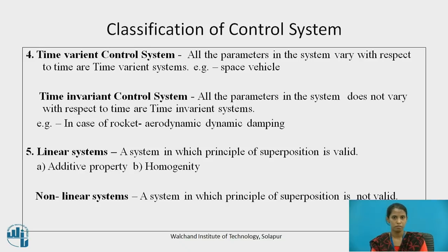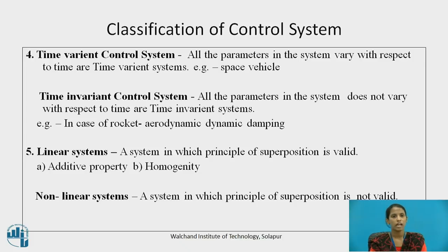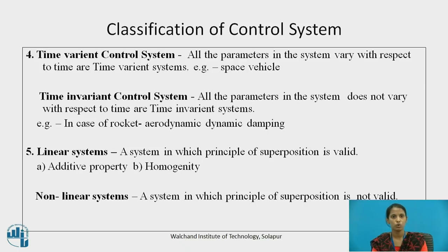Time-variant control system: in this type, all the parameters vary with respect to time. For example, a space vehicle — as it leaves the Earth's surface, its mass goes on decreasing, and mass is the parameter. Time-invariant control system: if all the parameters in the system do not vary with respect to time, it is known as a time-invariant control system. In the case of a rocket, aerodynamic damping changes as the air density changes.